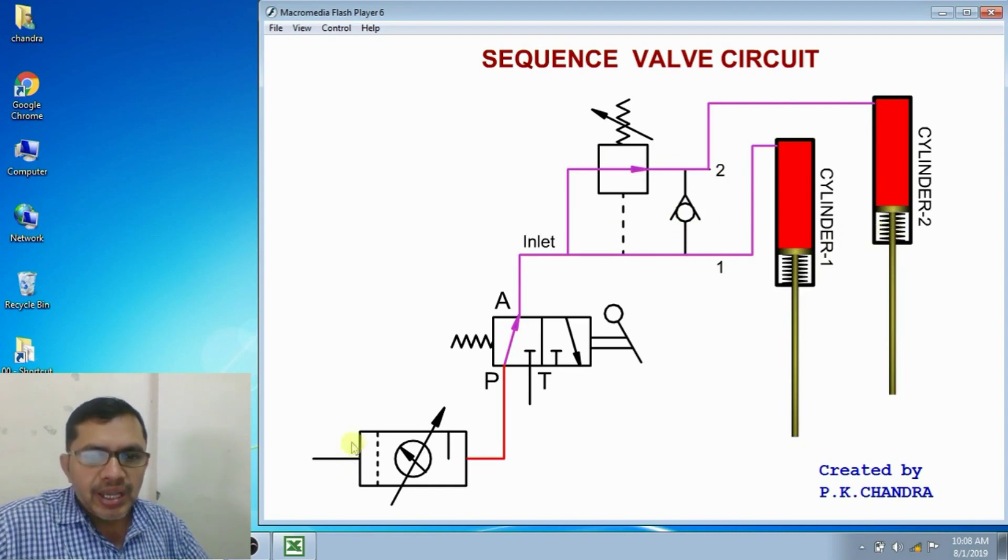And this is FRL unit, filter, regulator, lubricator. And this is 3x2 direction control valve. It has three ports, P, A and T. And it has two positions. In first position, P to A connection is there. T is closed. In the other position, A to T connection is there. P is closed.